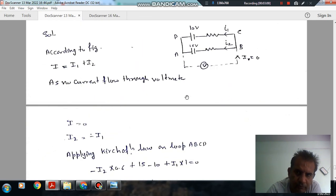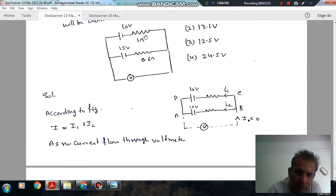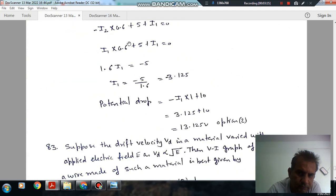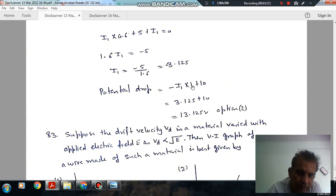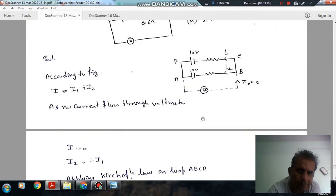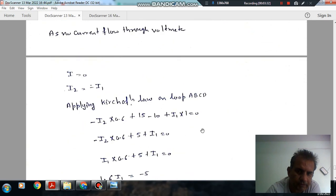So, 3.125 into 1 minus I1 plus 10. So I1 value is minus, so it is 3.125 plus 10 or 13.125 volt. Option 2 is the answer.